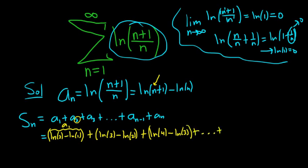Now we're plugging in n minus 1 here. So n minus 1 plus 1 is n. So it's ln n minus ln n minus 1. And then the last one is a sub n, which we already have written down. So ln n plus 1 minus ln n.